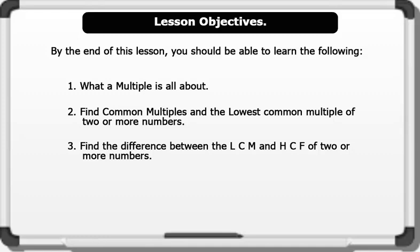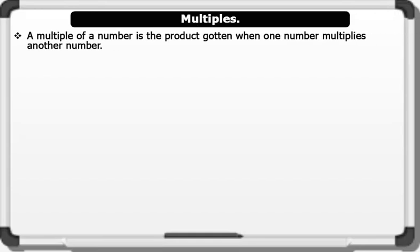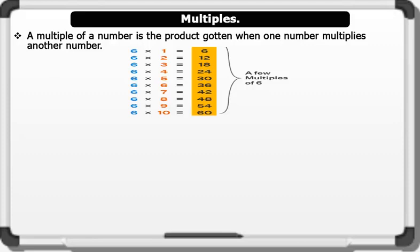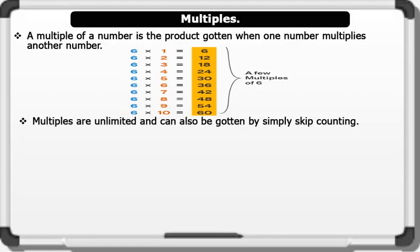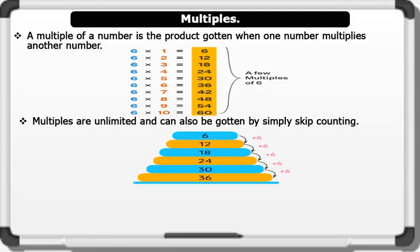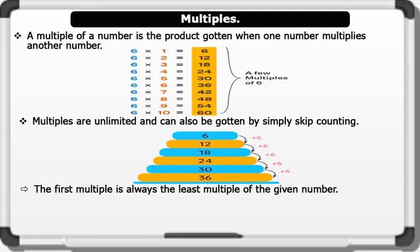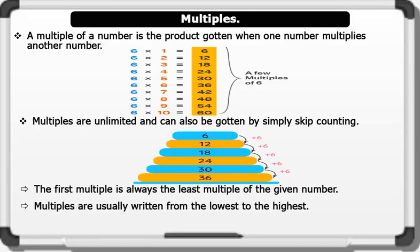A multiple of a number is the product gotten when one number multiplies another number. As shown in the image below, the numbers in the yellow column are the multiples of six. Six is the first multiple of six and sixty is the tenth multiple of six. Multiples are unlimited and can also be gotten by skip counting — that is, we keep adding the same number each time to the previous number, as shown below: six plus six gives us 12, 12 plus 6 gives us 18, etc.